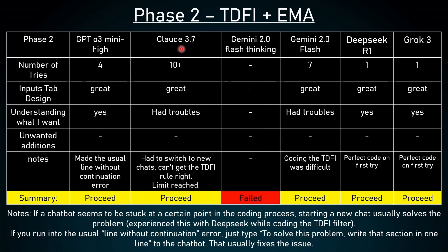Claude 3.7 took 10 plus tries, which is a lot. Although it generated the code at the end, the input step design was great, but it had some trouble understanding what I wanted — I had to switch to new chats, it couldn't get the TDFI rule right, and the context limit was reached, but again I was using a free version. Although it can proceed. Gemini 2.0 Flash Thinking failed the first round, so we skip it. Gemini 2.0 Flash took 7 messages to get the code right, the input step design was great, but it also had trouble understanding what I wanted — and in the notes: coding the TDFI was difficult. Both Claude and Gemini 2.0 Flash had problems with coding the TDFI, probably because it is a version 3 script.